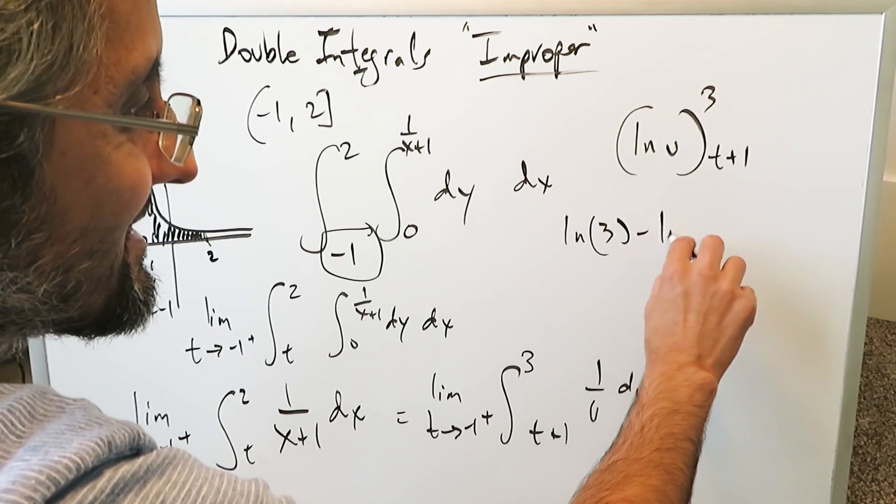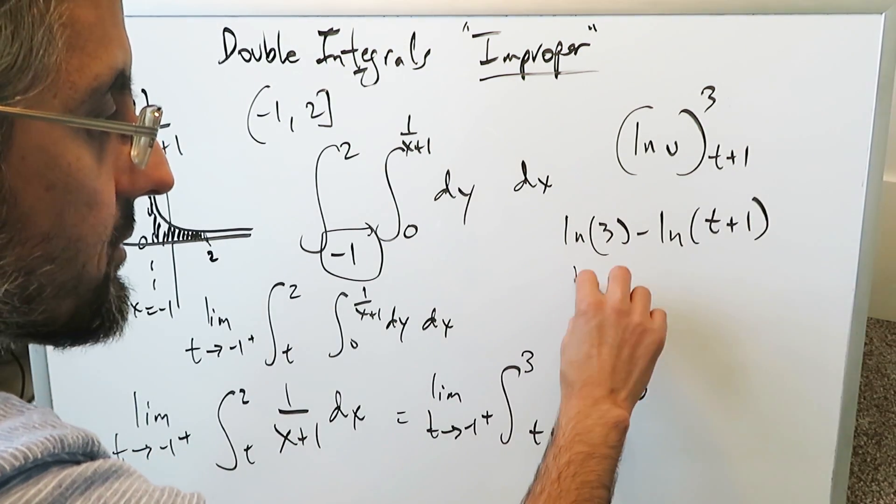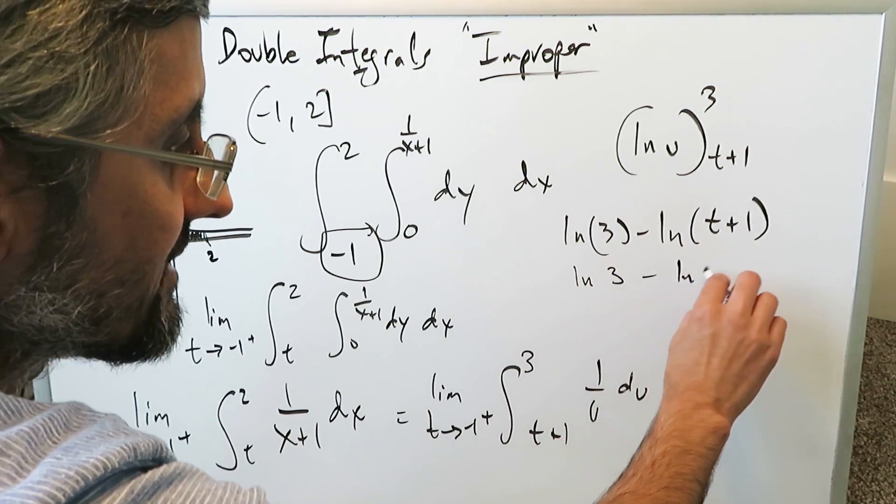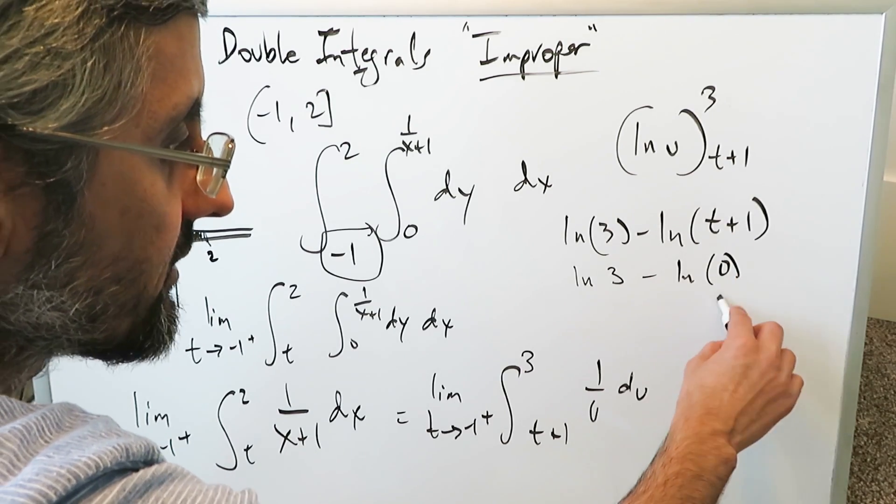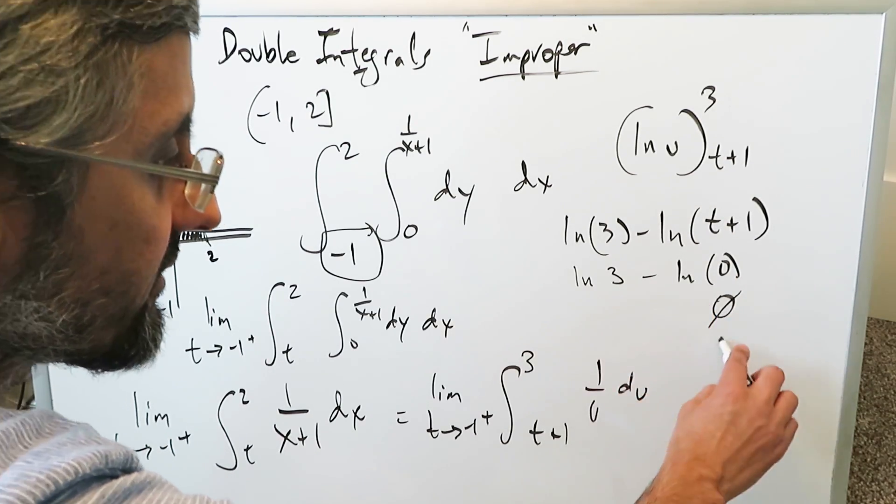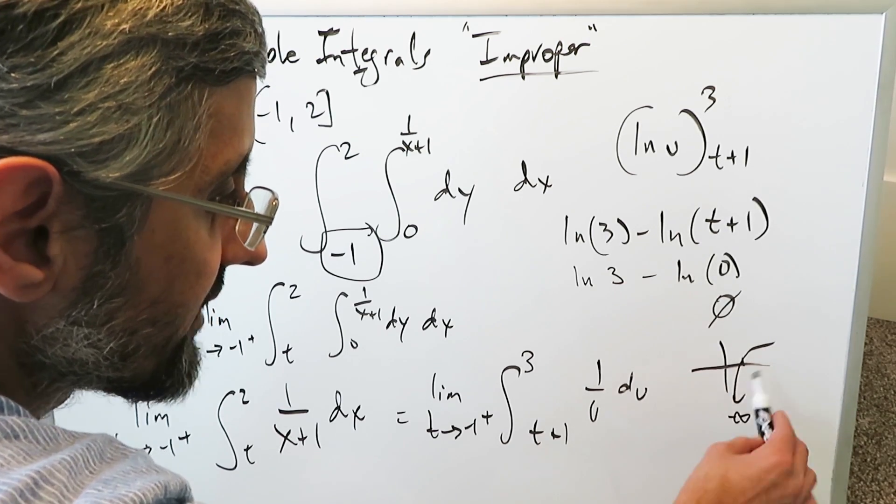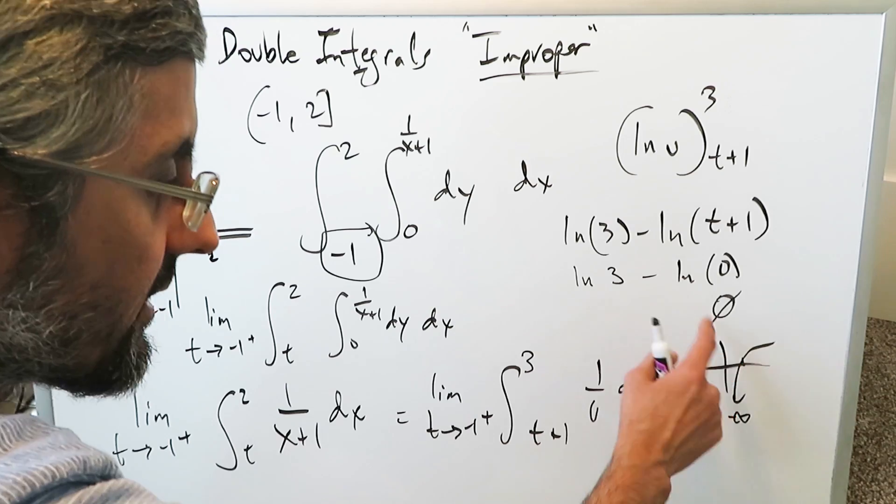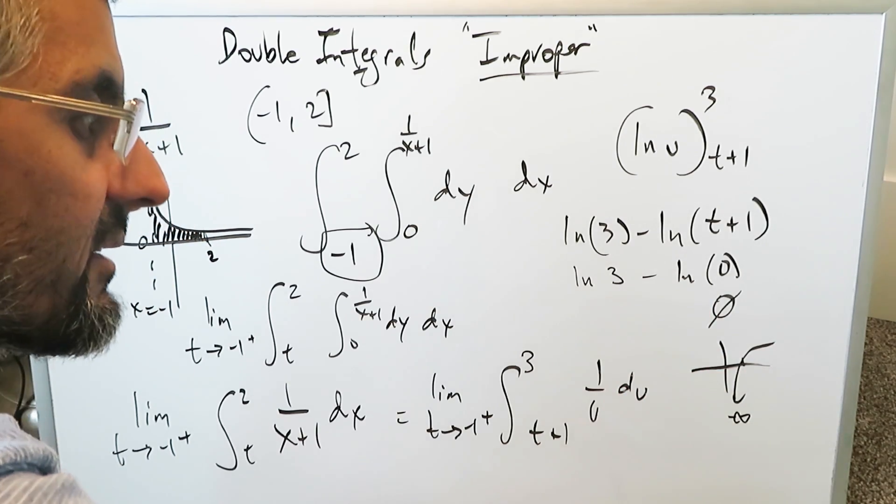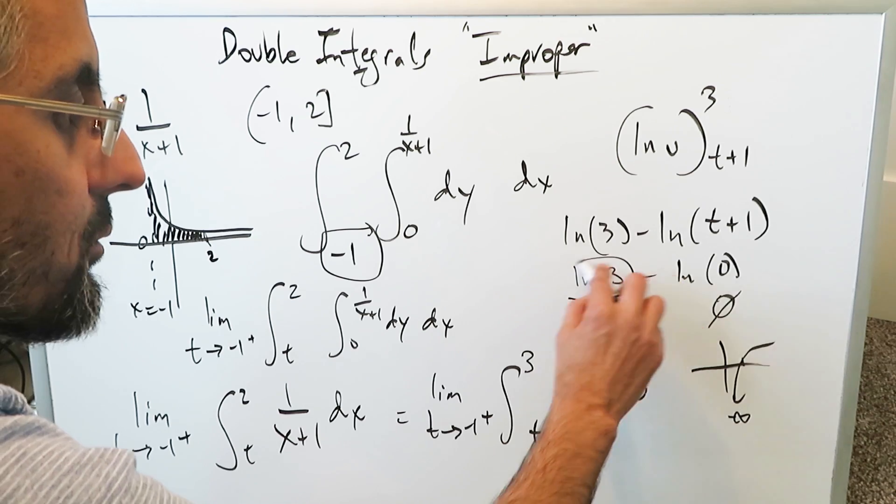You have natural log 3 minus natural log of t plus 1. When you put the t value in, you have natural log 3 minus natural log of 0. Natural log of 0 is undefined. Some will say it's an infinity, it's undefined. If you look at the natural log curve in the direction of minus infinity, your curve is going towards there. Undefined, minus infinity, infinity—it's still not a finite value. This right here cannot overcome that.